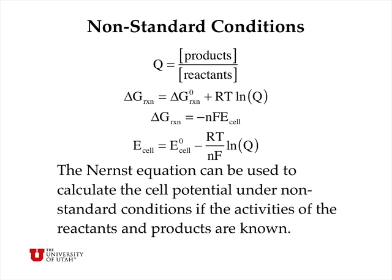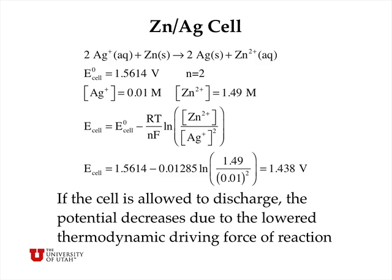Under non-standard conditions, we can write Q for this reaction, which is the ratio of thermodynamic activities or concentrations of products relative to reactants. ΔG equals ΔG⁰ plus RT log Q, and ΔG is related to the electrochemical potential by the factor −NF. So E_cell equals E⁰_cell minus RT over NF times log Q. This is the Nernst equation, and it can be used to calculate the cell potential under non-standard conditions if the thermodynamic activities of the reactants and products are known.